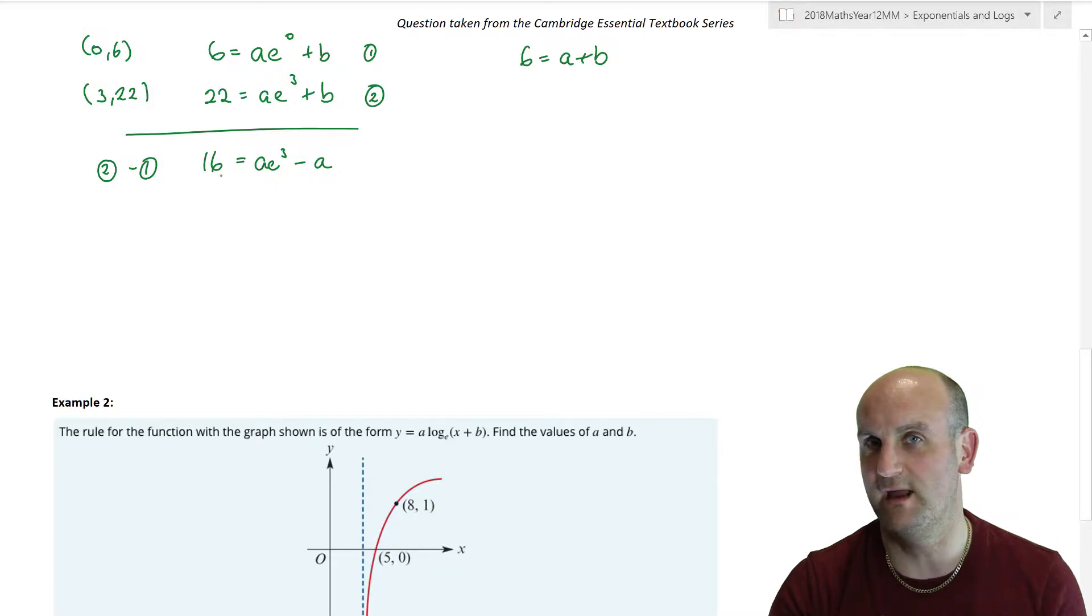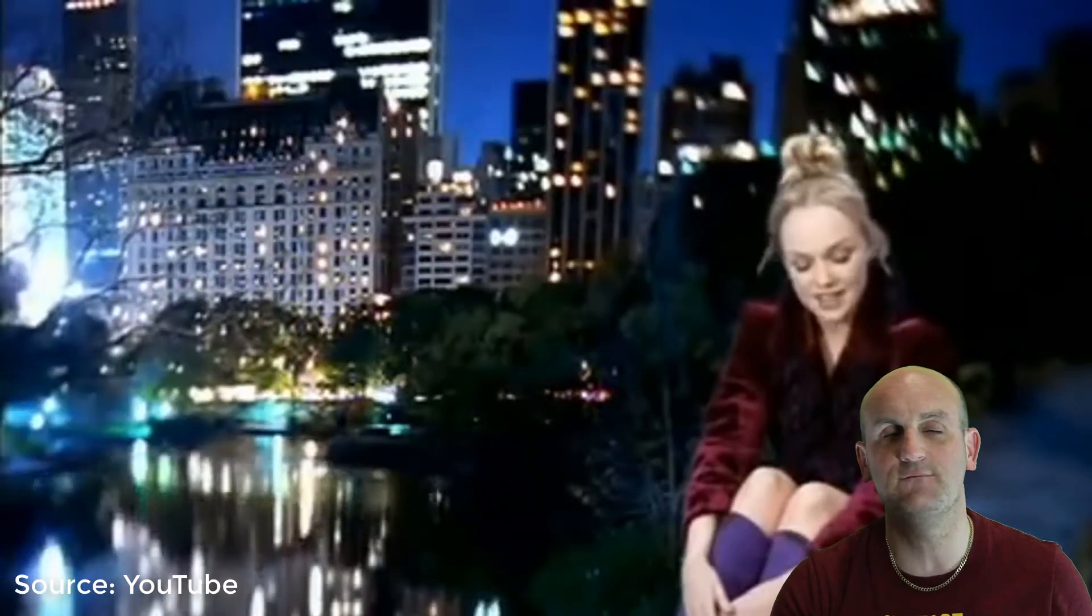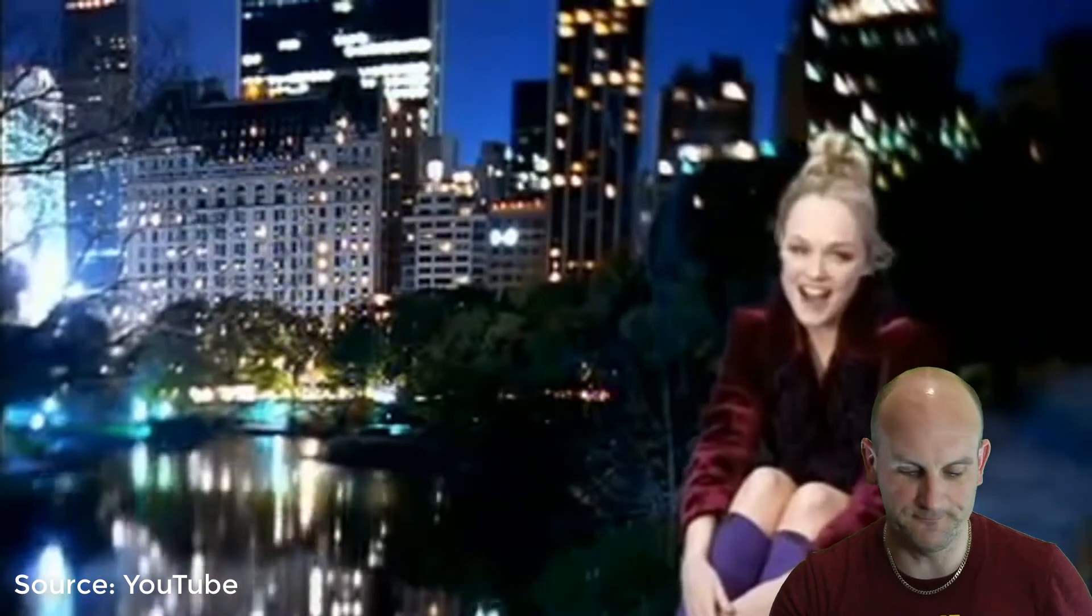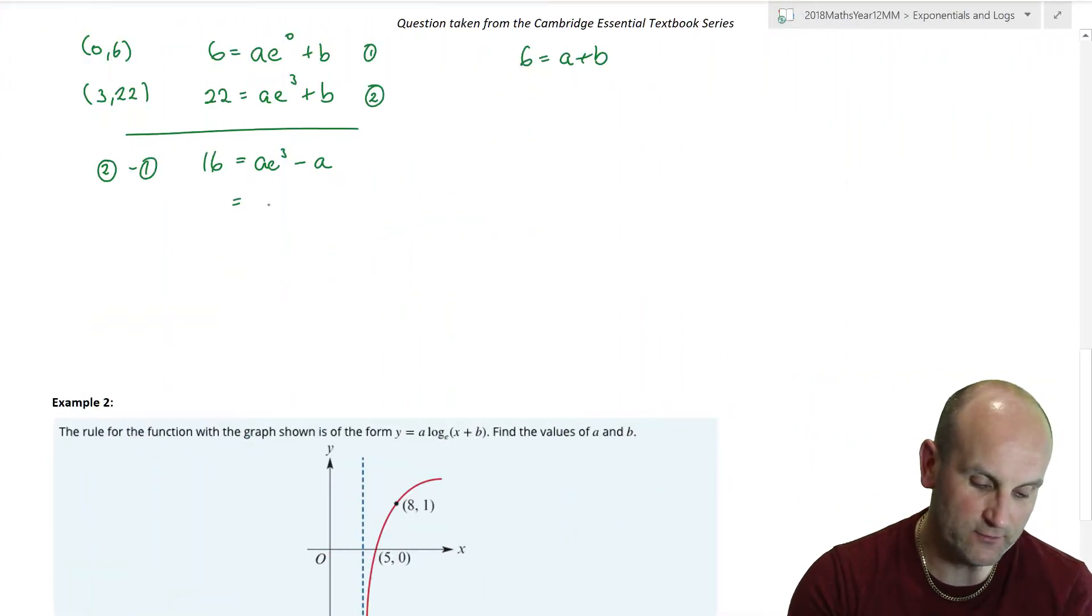So taking the first equation away from the second equation, the b's cancel out, thank you very much, and then I get a times e to the 3 minus a. Now I'm going to simplify that e to the 0 to 1, and you're going to say, stop, hold on a moment, where is my one term? And I'm going to say to you, this is methods, this is more complicated, and we are more than able to have that type of expression. Work with me and I'll show you. 22 minus 6 is 16, and there is my first line. Now I'm trying to find the value of a and b. What can you see? Well I've got two a's, and as I'm very fond of saying, my Spice Girls, two become one.